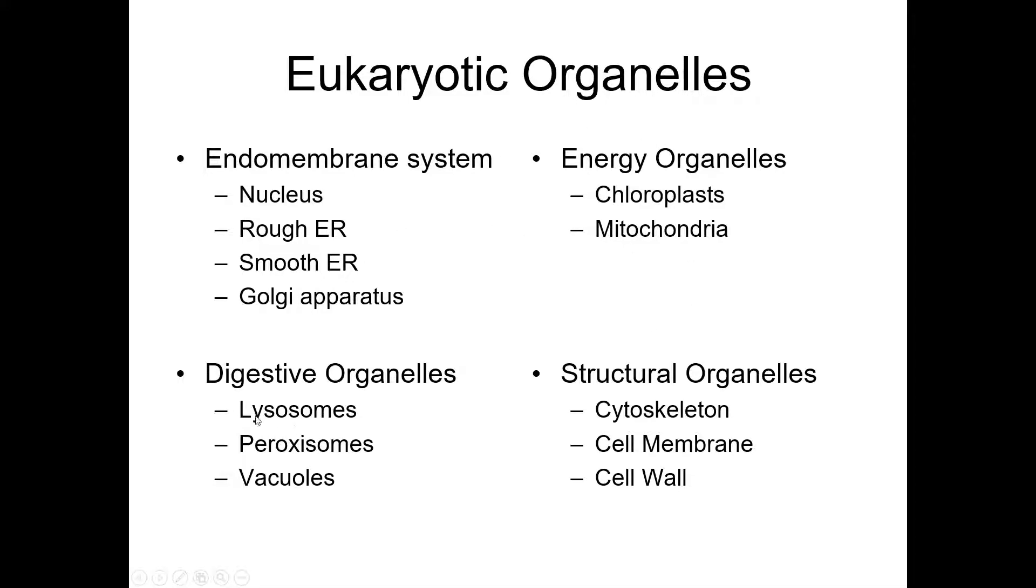Lysosomes is such an important one. You can guarantee you're going to have a question on that. All these other ones—peroxisomes, vacuoles, Smooth ER, Golgi apparatus—you're not guaranteed to have questions on them. They're grouped together in such a way that it randomizes which one you get, but you've got to know all of them because you don't know which one you're going to get.